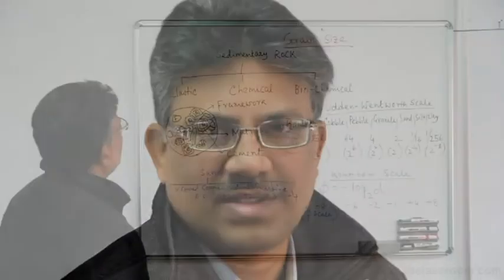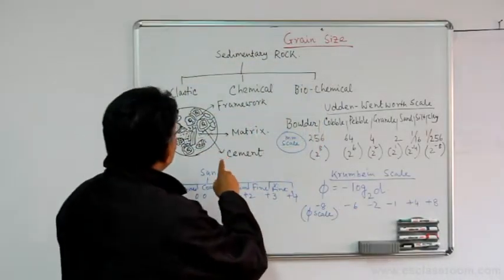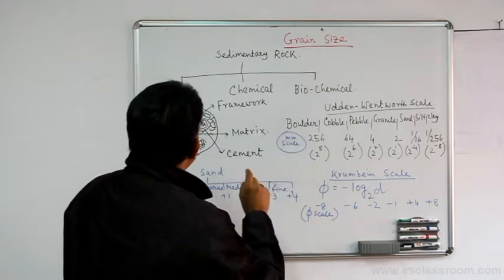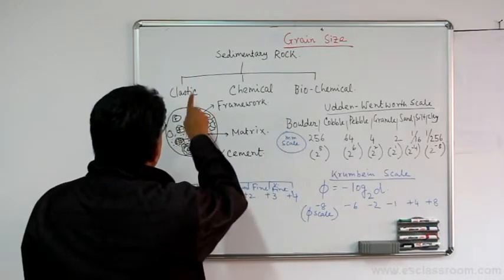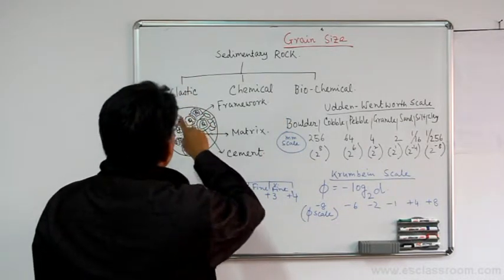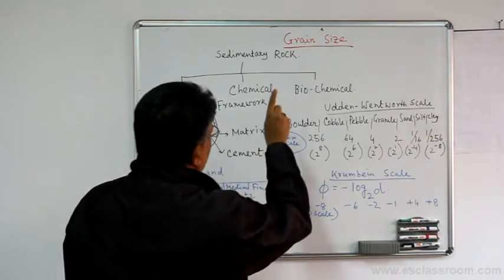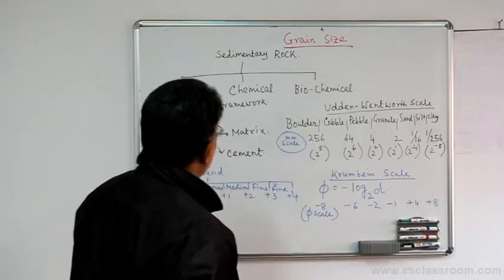Today we will be discussing the grain size of clastic sediments, which is a very important parameter to identify and analyze the different kinds of clastic sedimentary rocks. In sedimentology, there are different kinds of sedimentary rocks: the clastic or siliciclastic sedimentary rocks, chemical sedimentary rocks, and biochemical sedimentary rocks.